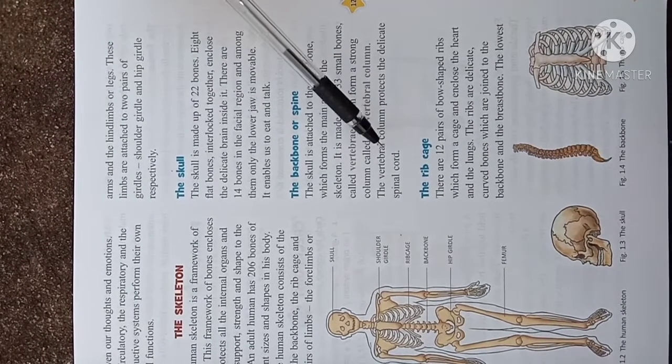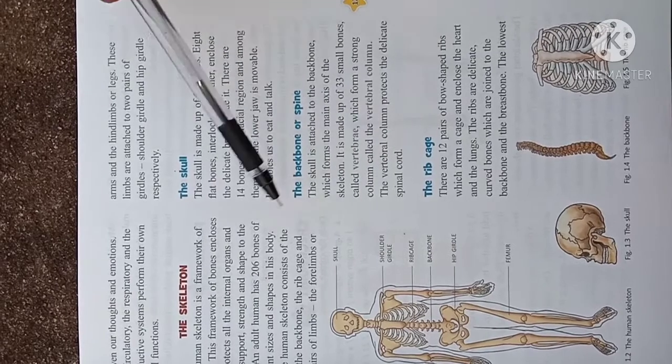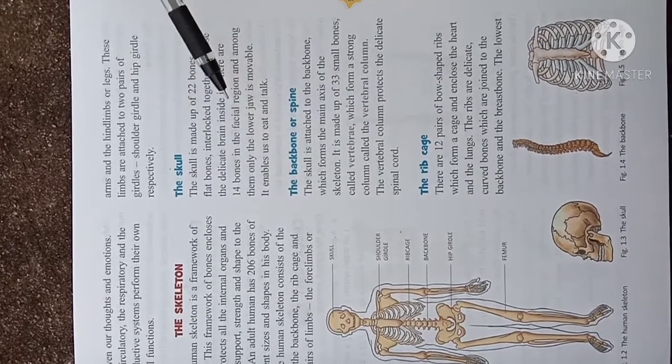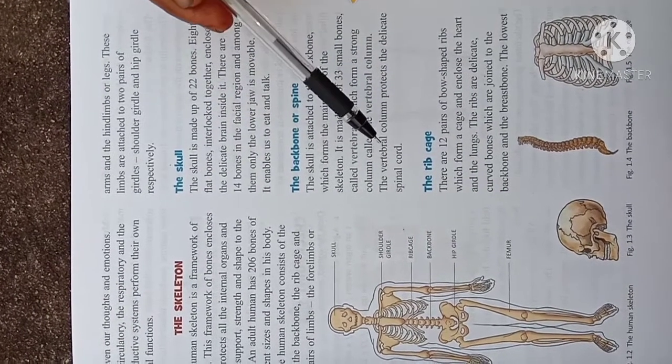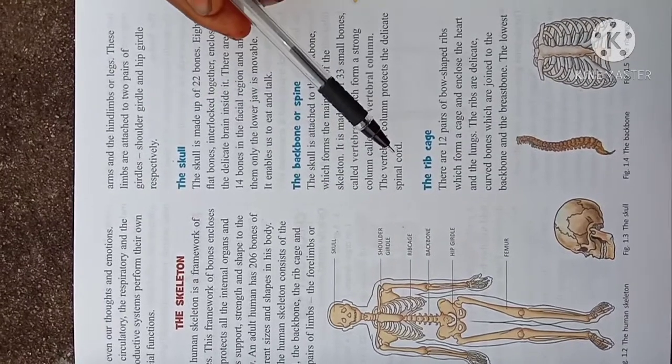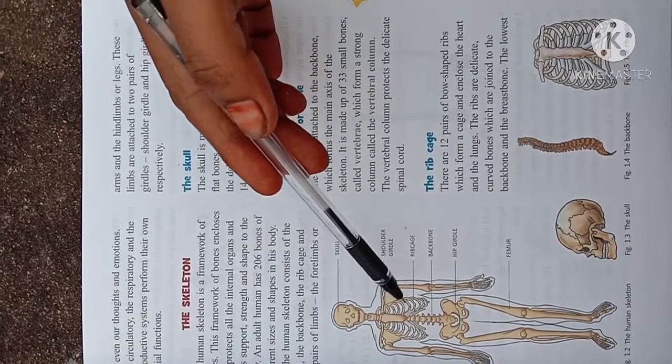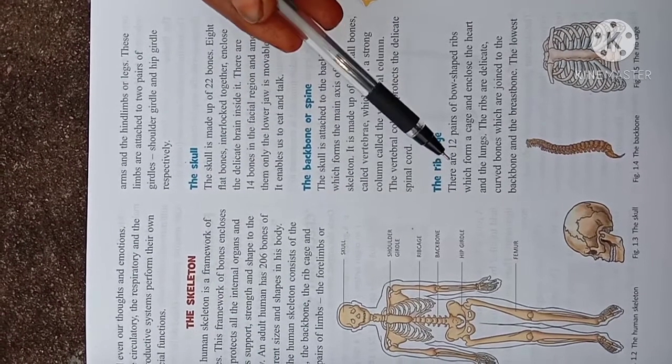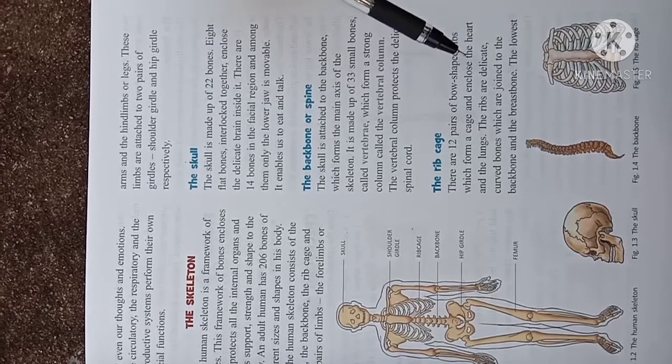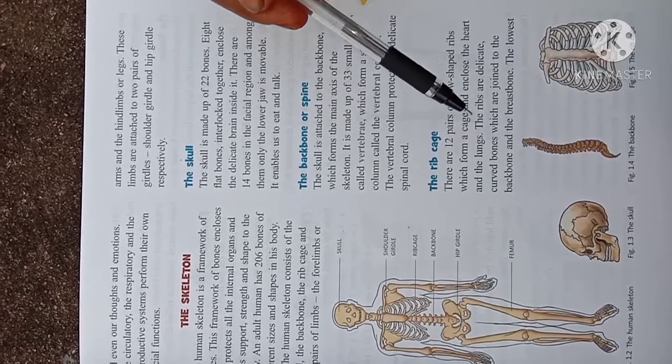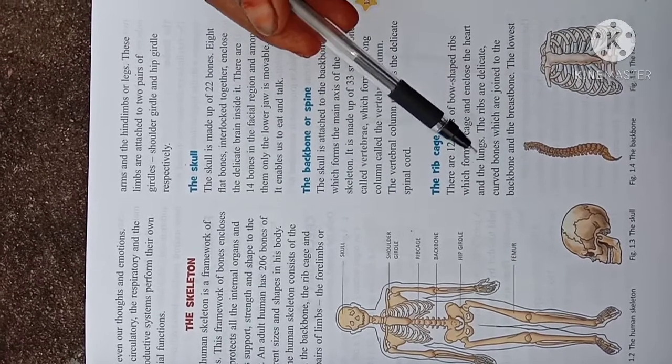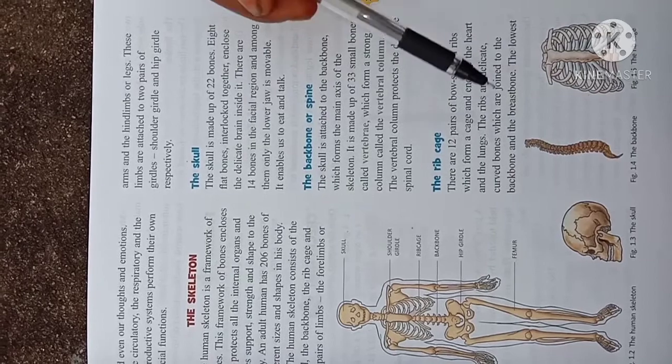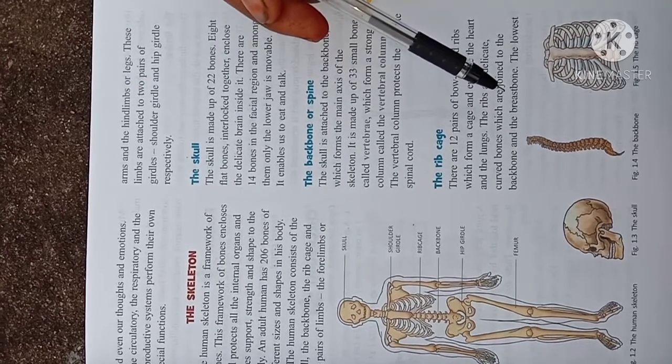Next, the rib cage. There are 12 pairs of bow-shaped ribs which form a cage and enclose the heart and the lungs. These ribs are delicate curved bones which are joined to the backbone and the breastbone.